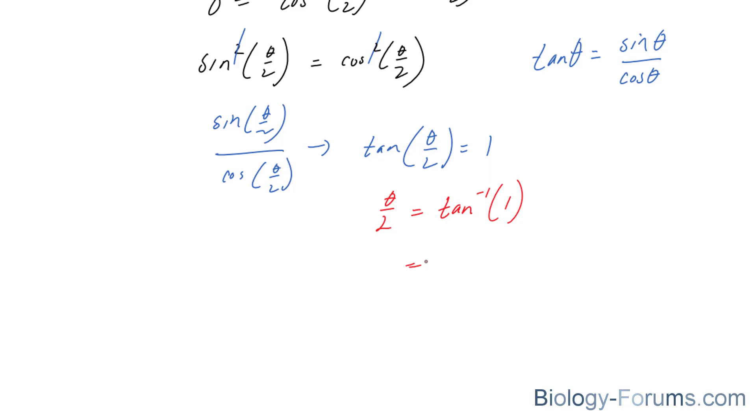On your calculator, that is equal to 45 degrees. But since we're working with radians here, it's pi over four. We're still not done. We still need to find out what our theta is. So we're going to multiply both sides by two and we end up with pi over two.